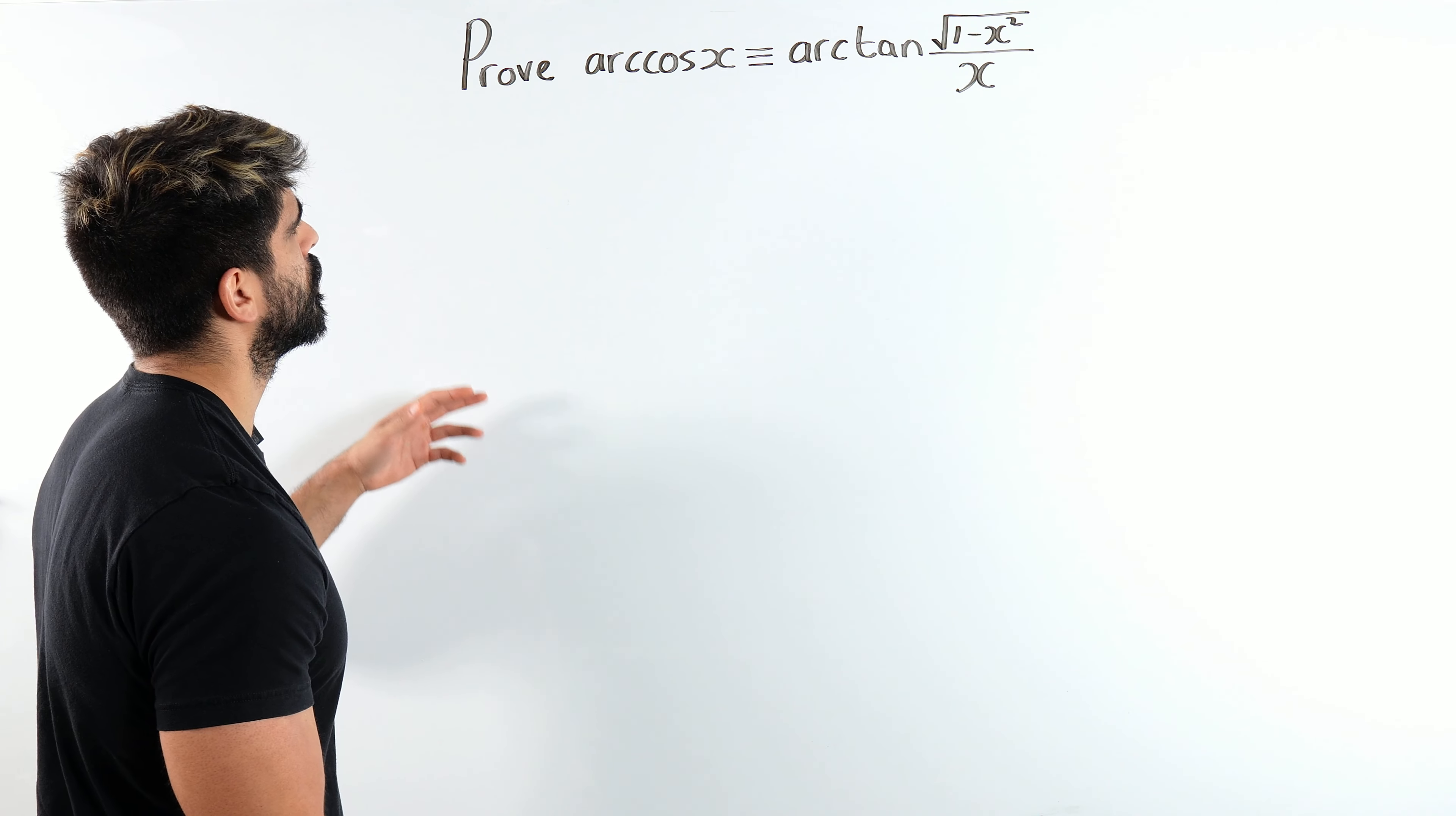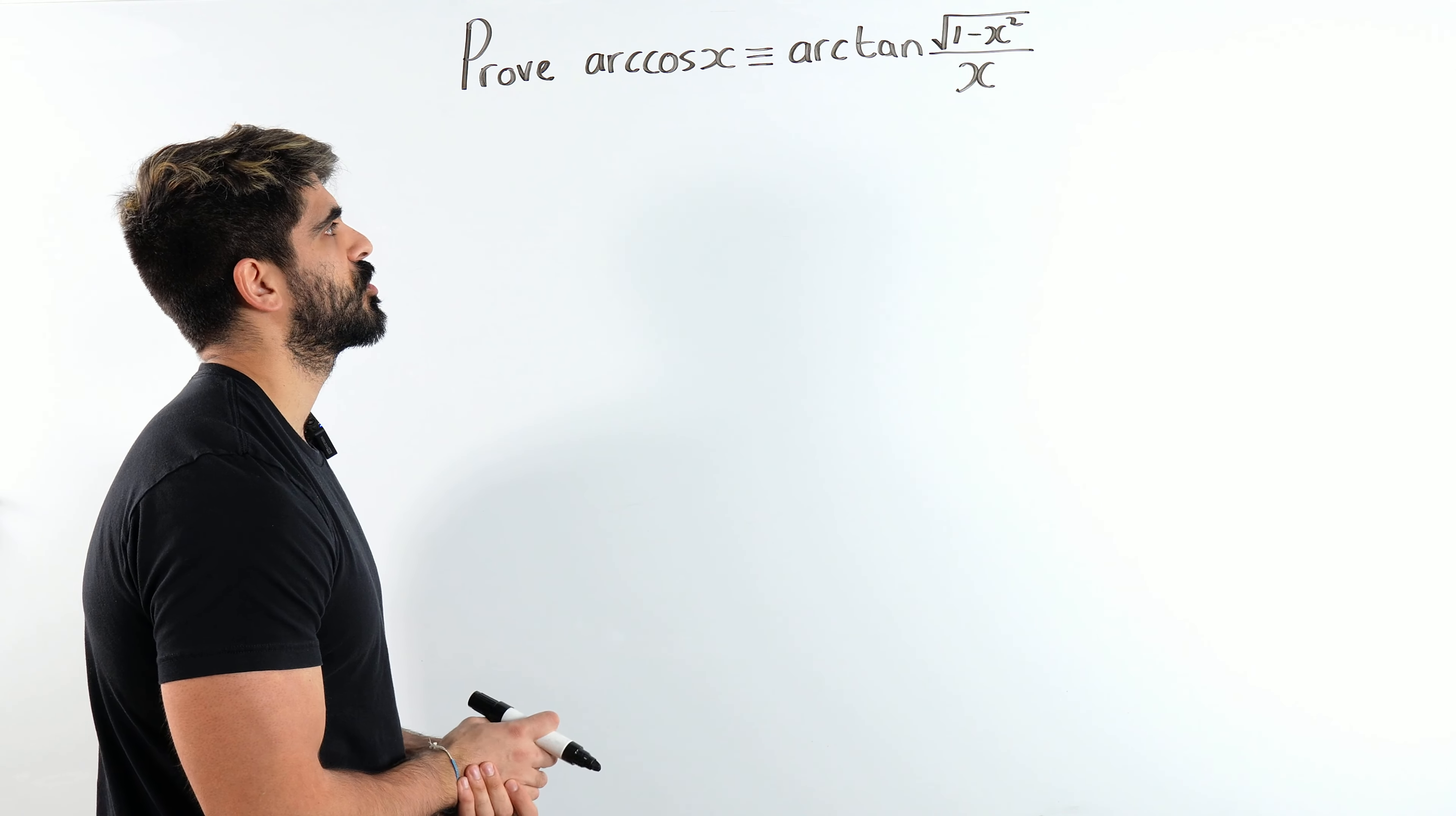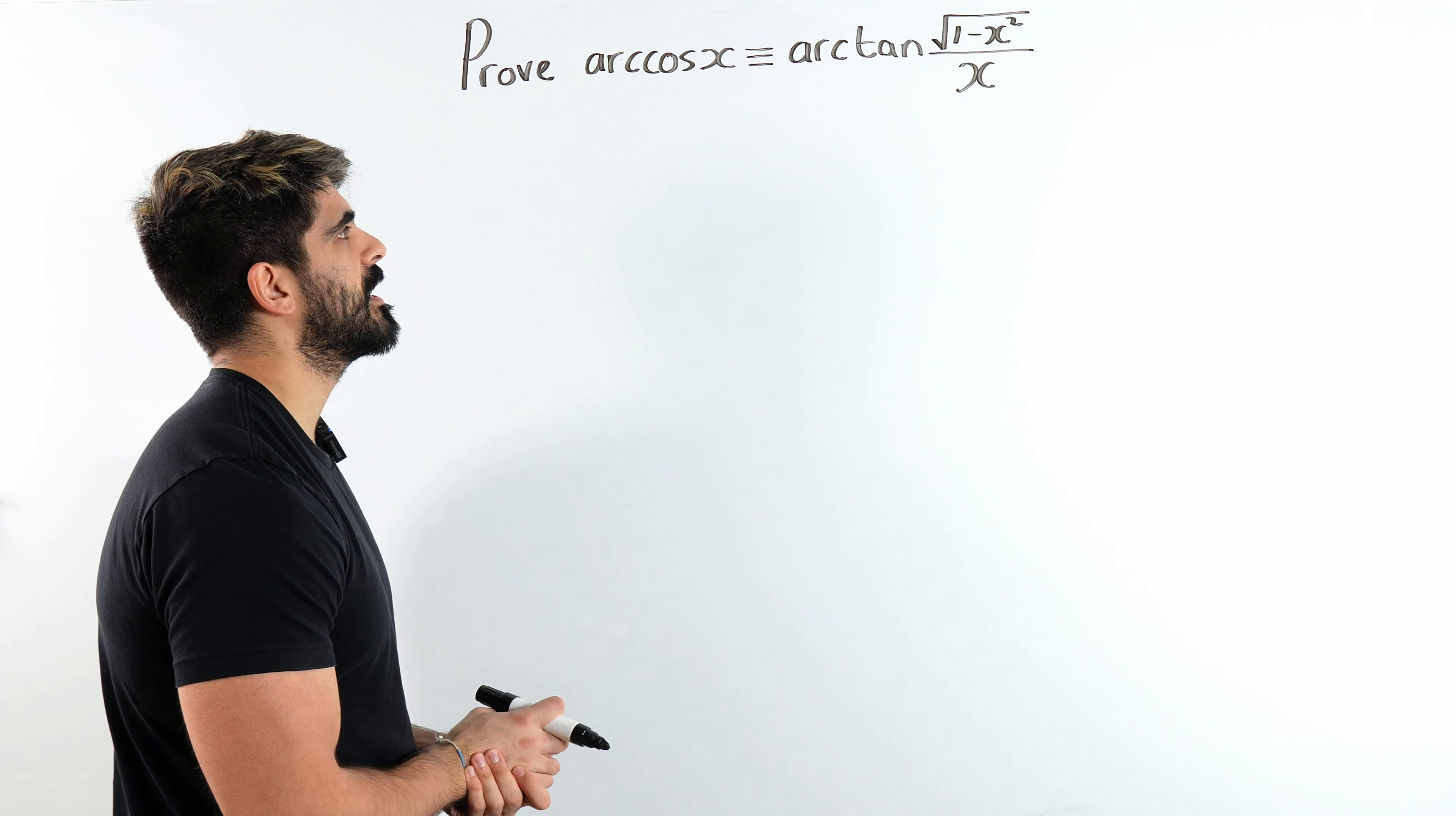Somebody in Grimsby told me that this was in their entrance exam for nursery. It says prove arccos x is equivalent to arctan of the square root of 1 minus x squared over x. Looks like a mad one.